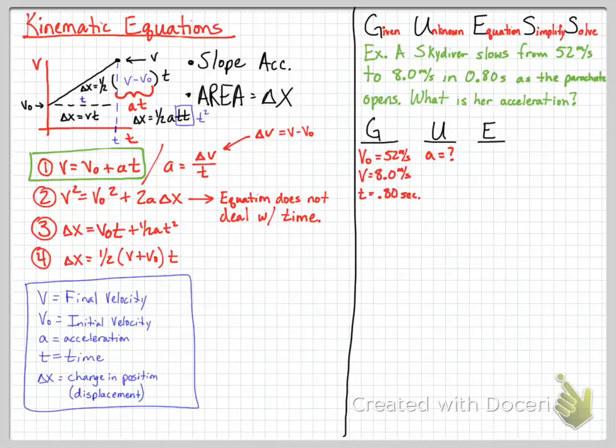Or you recognize that of our givens and our unknown, we don't have displacement. And you go over there and look at all the equations and find the one equation that doesn't have displacement. And if you look, equation two has displacement. Equation three has displacement. Equation four has displacement. And equation one does not. So that's another way to find your equation that you need to use. It's either find the equation that has the exact four that you have, or find the equation that has the one thing that you're missing. So here we're missing displacement. Go find the equation that's missing displacement. So the equation we're going to use is V equals V0 plus AT.